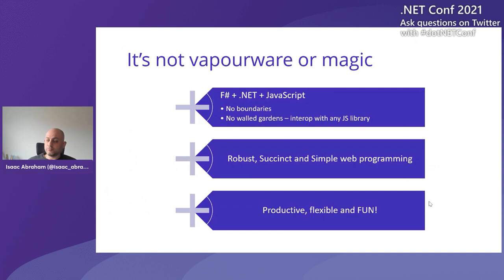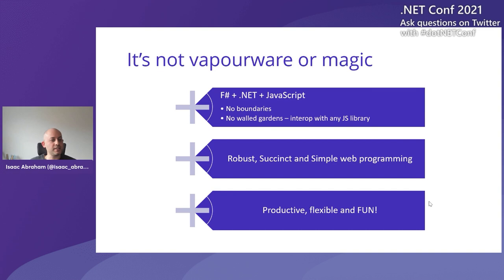Just to reinforce that: this is not vaporware or magic. We've been writing this for a few years and doing systems for large organizations. F-Sharp runs on top of .NET and JavaScript — we're not trying to hide these technologies or abstract away JavaScript. We think JavaScript is a great ecosystem. We just want to give you the safety of F-Sharp's static type system on top of it, to really give it go-faster stripes, if you will.